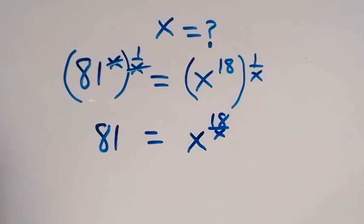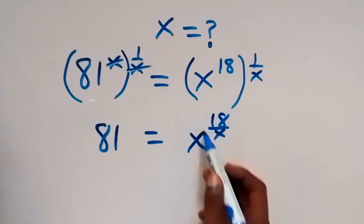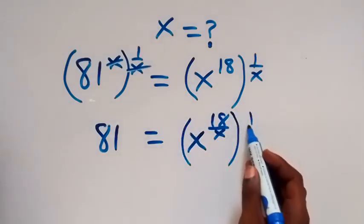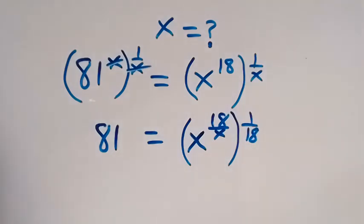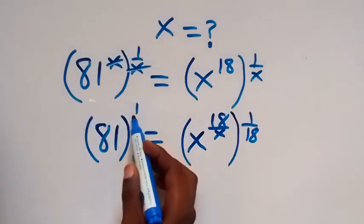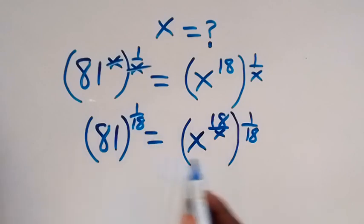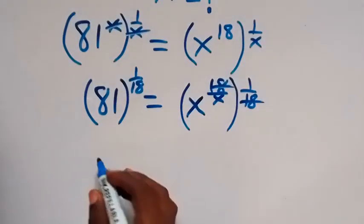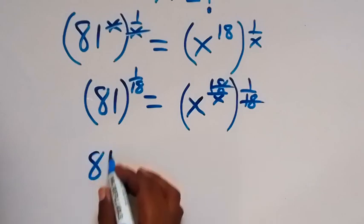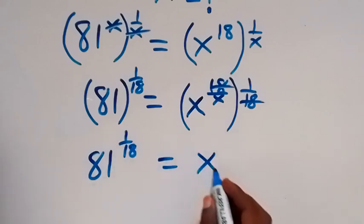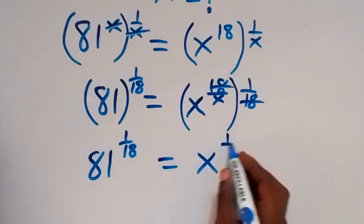Also, when this power multiplies, we are going to have x raised to the power of 18 over x. Then in the next step, let's remove this power of 18 here and multiply both sides by 1 over 18 — raise both sides to power 1 over 18. So that when this multiplies, 18 will cancel. This side will be left with 81 raised to the power of 1 over 18, which is equal to x raised to the power of 1 over x.